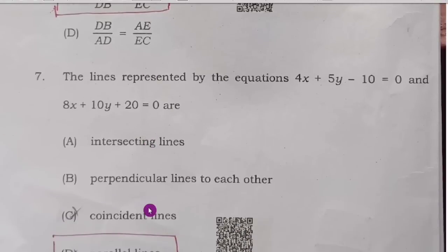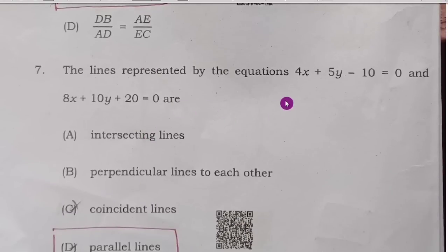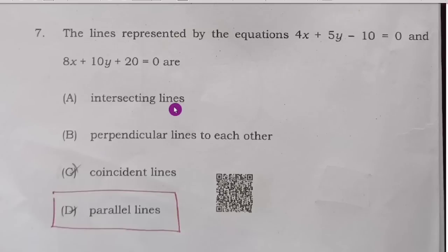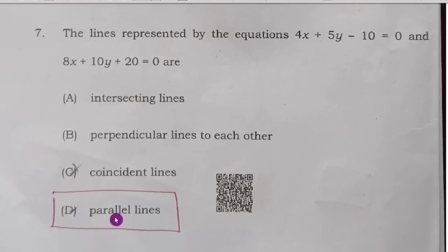Seventh question: the lines represented by the equations 4x + 5y − 10 = 0 and 8x + 10y + 20 = 0. Checking the ratios: 1/2 = 1/2 ≠ −1/2. Since a₁/a₂ = b₁/b₂ but not equal to c₁/c₂, these lines are parallel. Therefore, option D is the right answer.